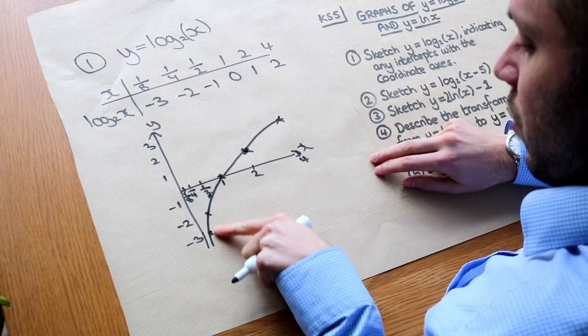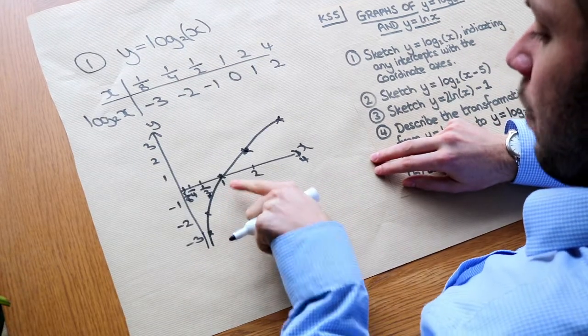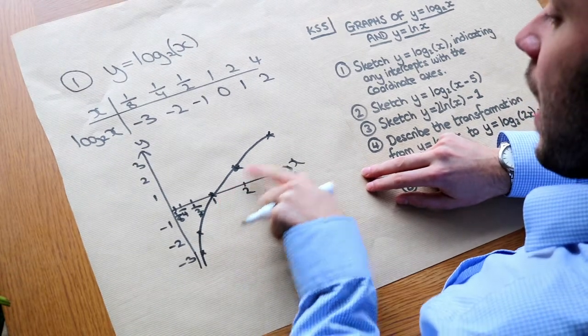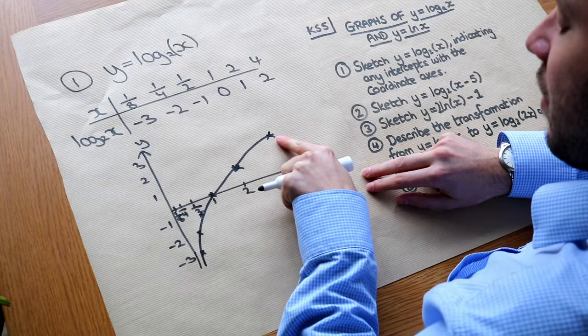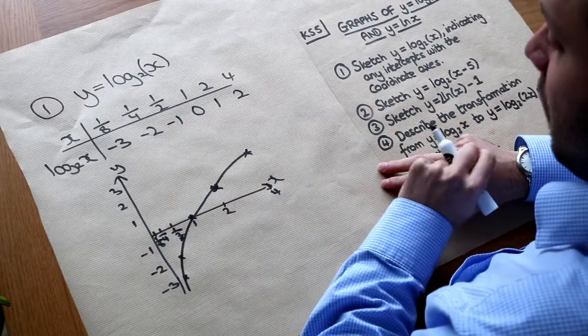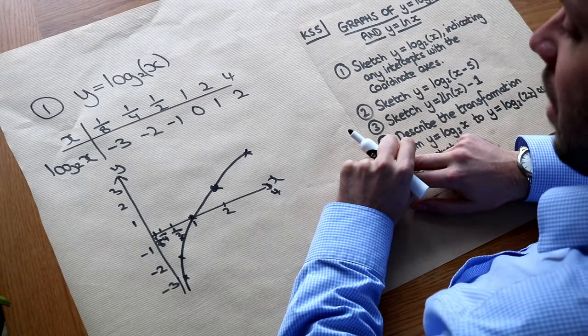So you can see that it tends towards negative infinity. It passes through 1 so the x-intercept is 1. And then it gradually gets more and more shallow, but it's still constantly going up. These y values will still be continuing to go up. So that's the shape of a log graph.